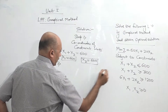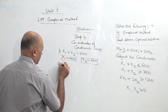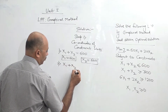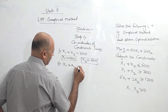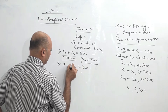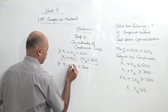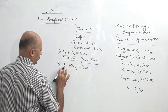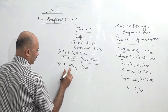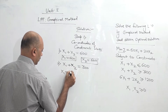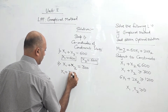Second constraint: x1 plus x2, assuming equality, equals 300. To find x1, assume x2 as 0, so x1 will be 300. And by symmetry, x2 will also be 300.